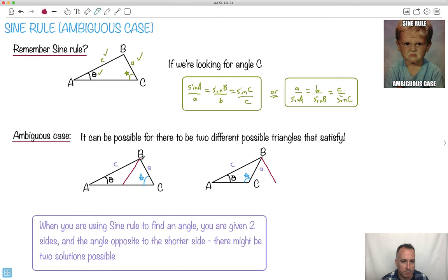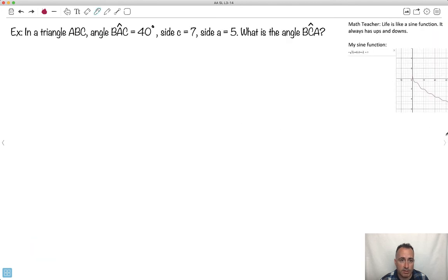So those are the two different solutions possible, as long as it still makes a triangle. You still have to check that the sides all add up to 180. But just so you know, at least these are the two different possibilities. Let's see if we can deal with a real question like this.